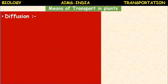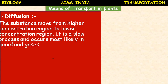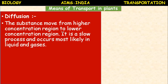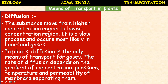Means of transport in plants - Diffusion: the substance moves from higher concentration region to lower concentration region. It is a slow process and occurs most likely in liquids and gases. It occurs from high concentration to low concentration until the concentration becomes equal on both sides - until it attains equilibrium. In plants, diffusion is the only means of transport for gases.